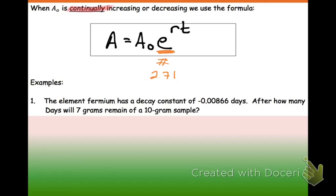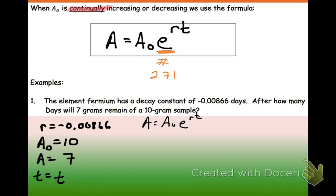So reading our example. The element fermium has a decay constant of negative 0.00866 per day. So our rate is going to be negative 0.00866. After how many days will 7 grams remain of a 10 gram sample? So our initial amount is a 10 gram sample. And we want to know when is it going to get down to 7. Again, we do not know our time. So we're going to go ahead and plug this in. So A equals A₀ e to the rt is our formula. So that means we have 7 equals 10e to the negative 0.00866t. We can divide by our 10, and we get 0.7 equals e to that decimal.